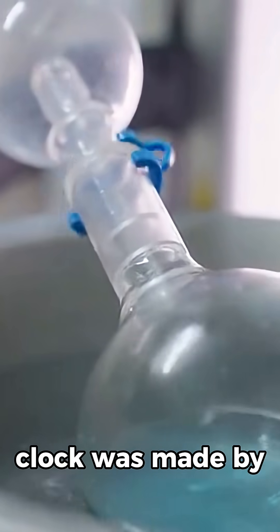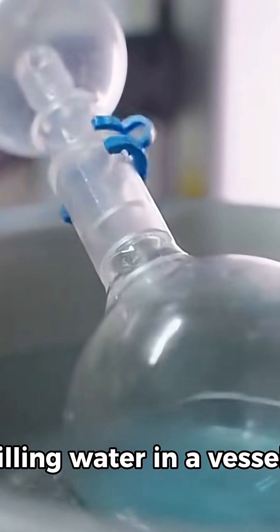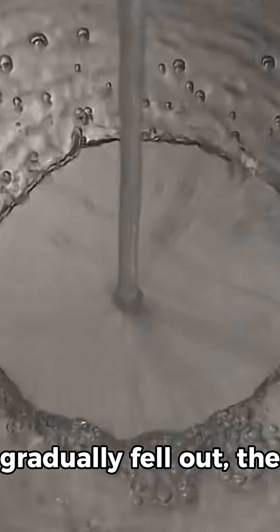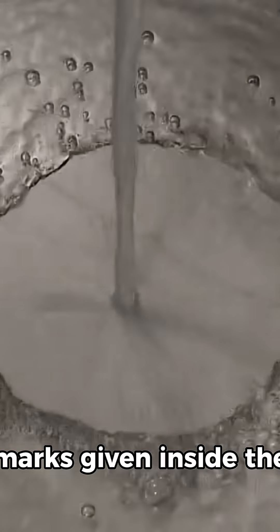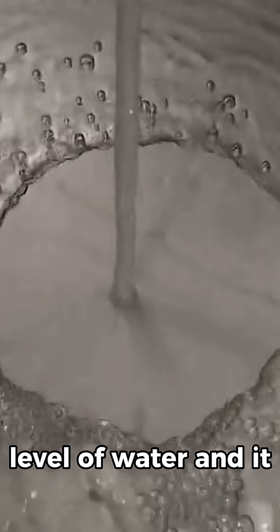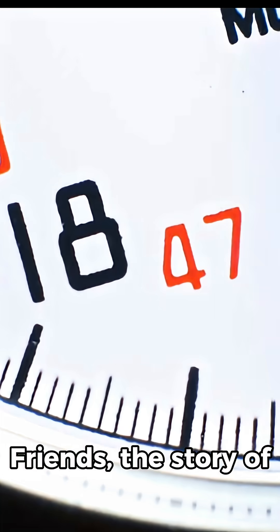That is why the water clock was made by filling water in a vessel. There was a small hole in the vessel from which the water gradually fell out. The marks inside the vessel told the time according to the water level, and it could work both day and night.